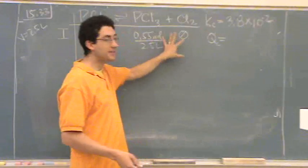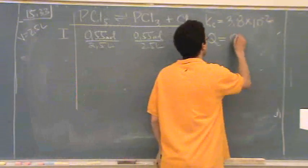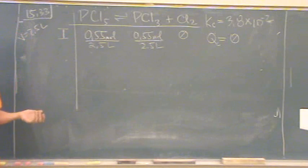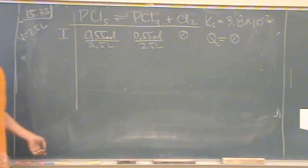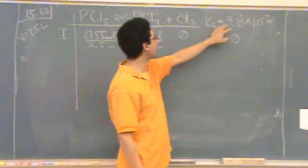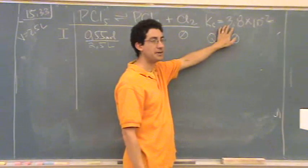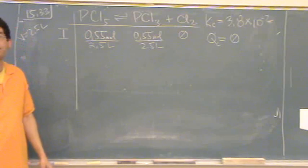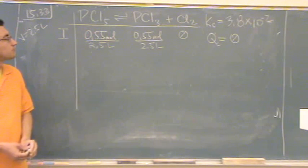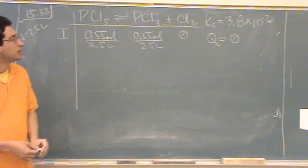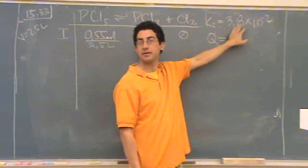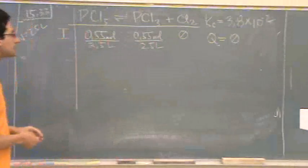If anything here is zero, Q has got to be zero. So Q is really tiny - so tiny it's zero. It has to shift which way to get to this number? Does it need more reactants or more products? Yeah, it needs more products to get to a bigger number.